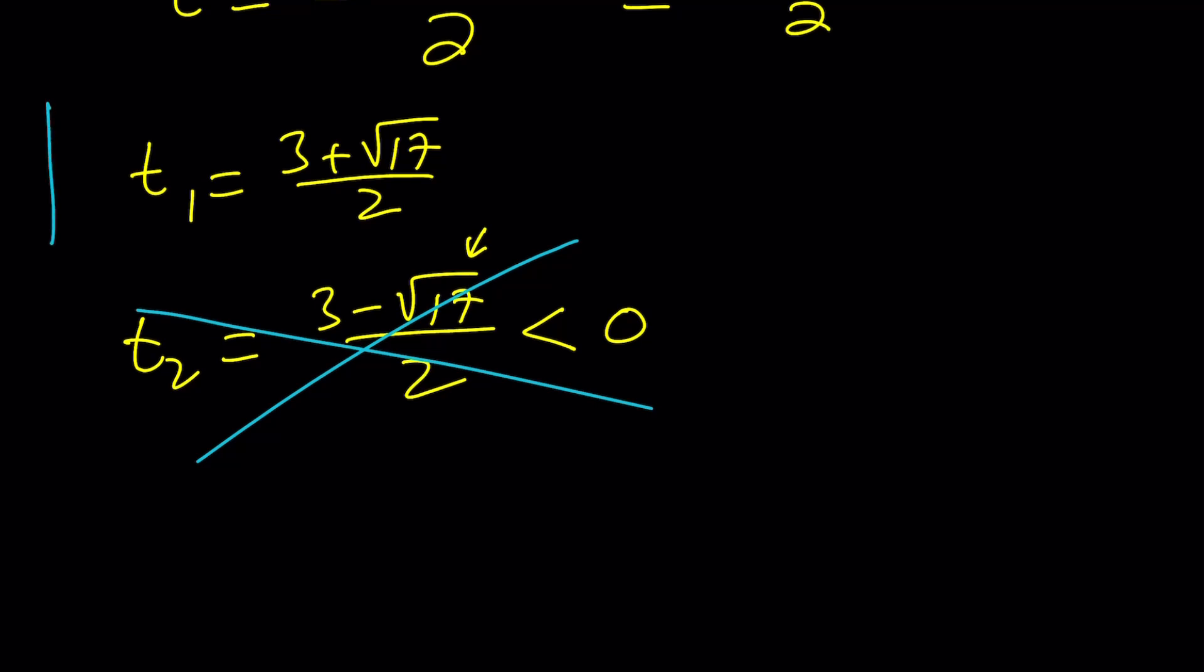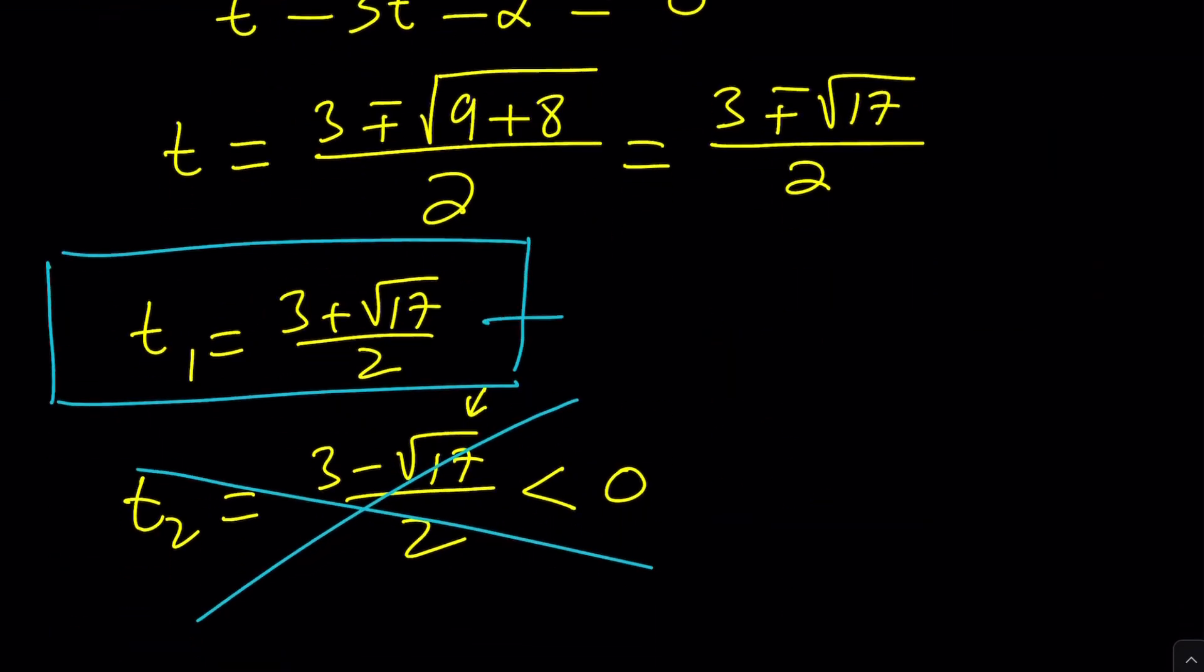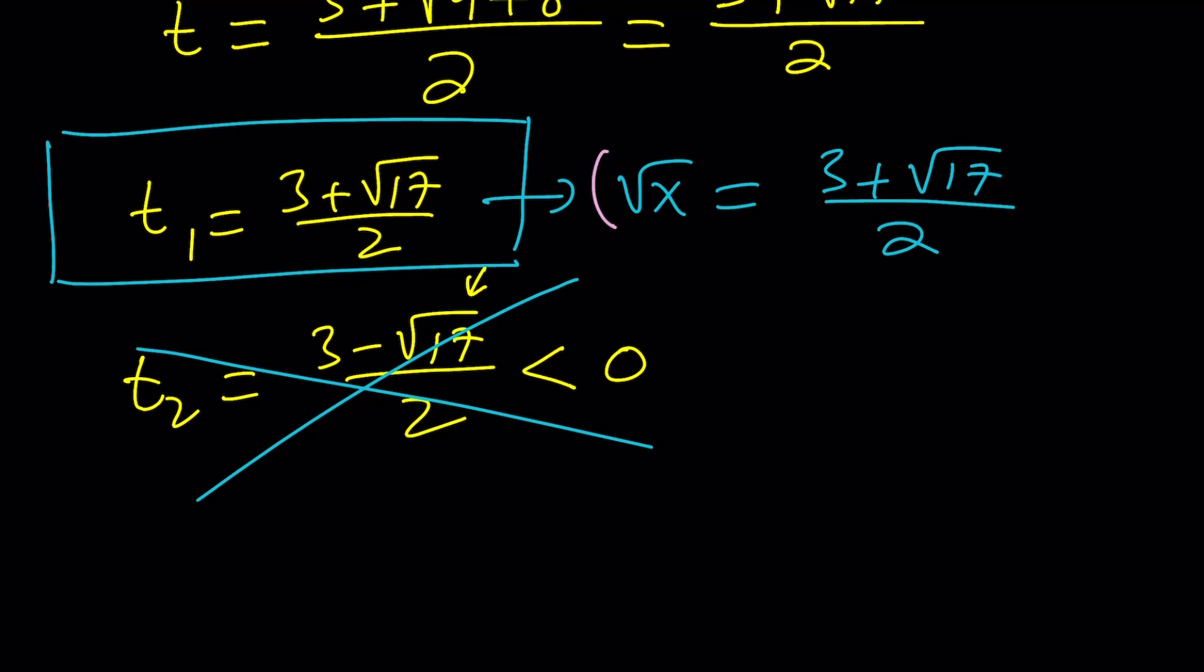So now, this is my acceptable good t value. And t is equal to square root of x, right? So I'm going to set this equal to square root of x and solve for x from there. Solving for x is fairly easy. All you have to do is square both sides. Let's do it.